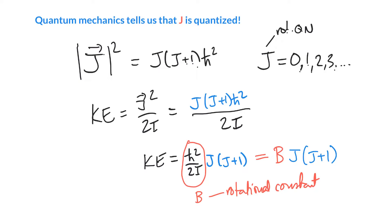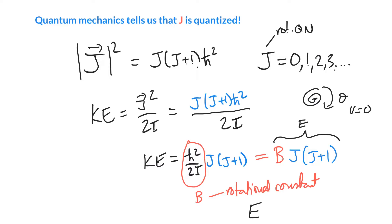If we have no potential energy — you can think of this thing as rotating, and its angle does not affect the energy, so V equals 0 — then the kinetic energy is the same as the total energy. That allows us to write the total energy for a rotating molecule, which depends on quantum number j, as the rotational constant B times the rotational quantum number j times j plus 1.